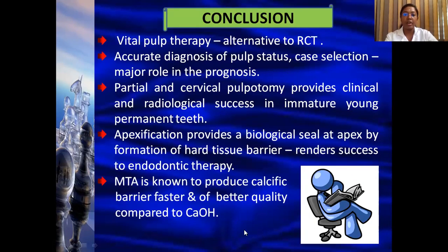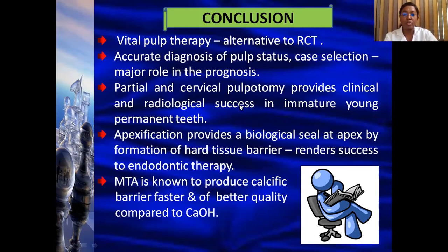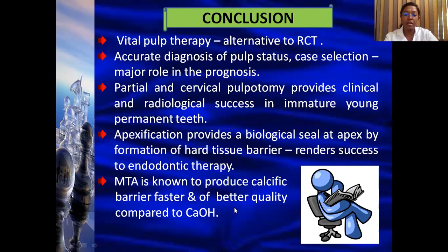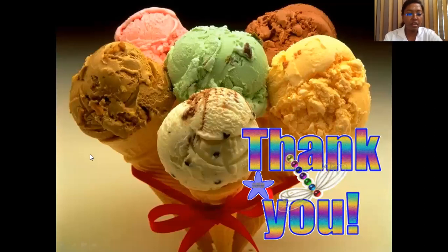In conclusion, vital pulp therapy is an alternative to conventional endodontic therapy; however, accurate diagnosis of pulp status is very important, and case selection plays a vital role in treatment prognosis. Either partial pulpotomy — removing only part of the affected coronal pulp — or cervical pulpotomy — completely removing the coronal pulp — can be done to maintain the vitality of the healthy pulp in the radicular dentin. Apexification gives a biological seal at the apex where a calcific barrier is created, enabling us to complete endodontic therapy and condense gutta-percha as an obturation material. MTA is better than calcium hydroxide, as it generates a harder, faster, and more effective calcific barrier. Thank you for your patient listening. Have a good day.